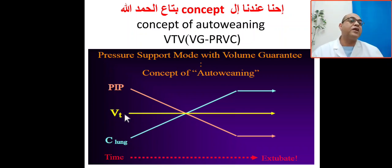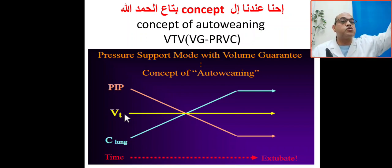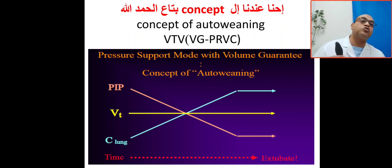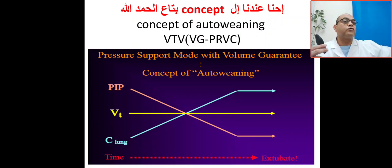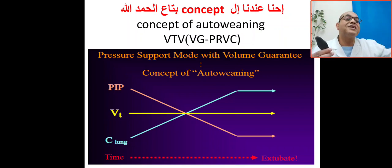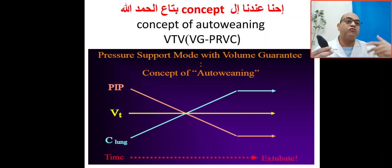Constant tidal volume prevents volutrauma and ventilation-induced lung injury. It will also prevent fluctuations of CO2 up and down. If CO2 is low — hypocapnia — leading to decreased cerebral perfusion, ischemia, infarction, BVL, cerebral palsy, and affected neurodevelopmental outcome. If CO2 is high, increased cerebral perfusion leads to intraventricular hemorrhage. So it will help decrease the incidence of IVH, BVL, cerebral palsy, and poor neurodevelopmental outcome.